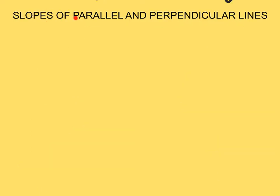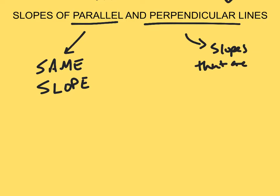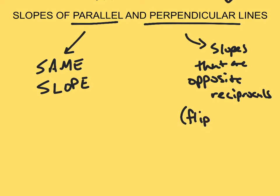When we're talking about the slopes of parallel and perpendicular lines, parallel lines have the same slope. Perpendicular lines have slopes that are opposite reciprocals. What we mean by opposite reciprocal is we mean flip the fraction and change the sign. When we say the word opposite, that means we want to change the sign, and reciprocal means you flip your fraction from numerator to denominator.